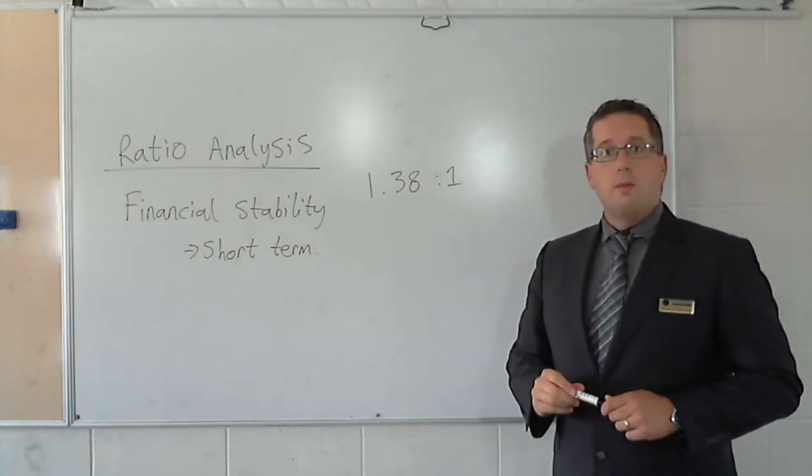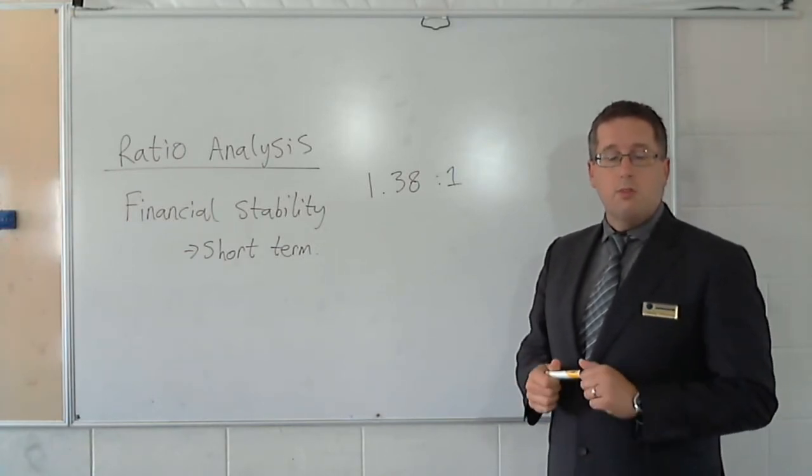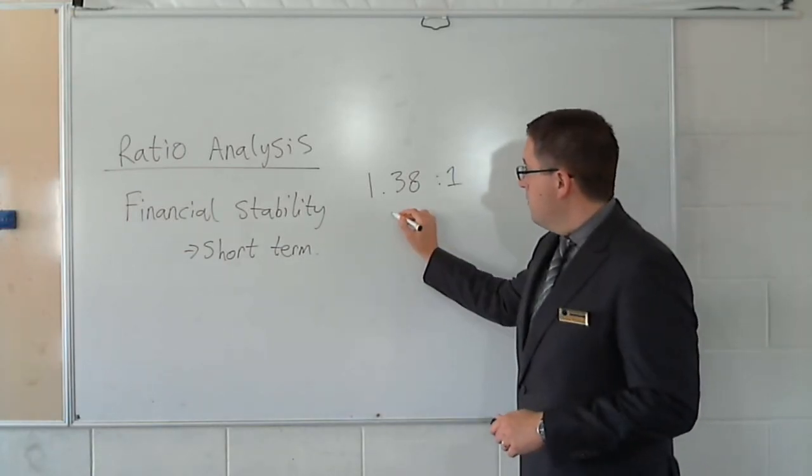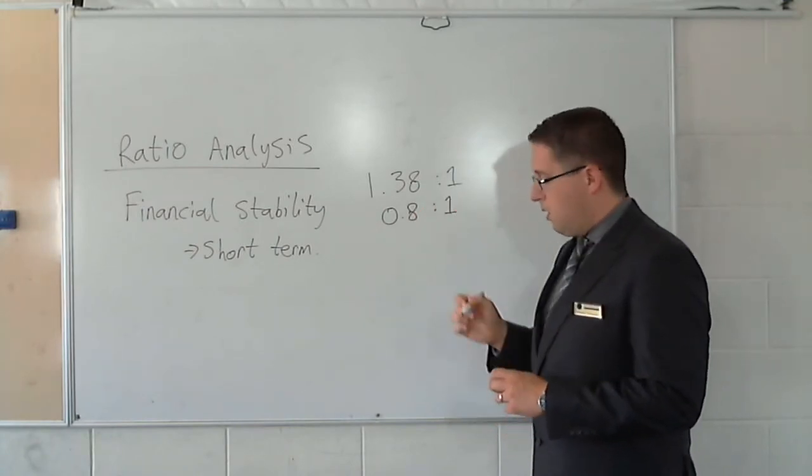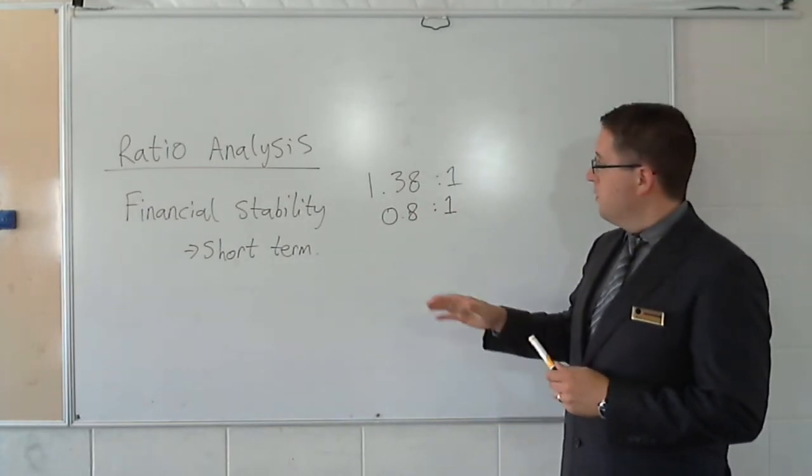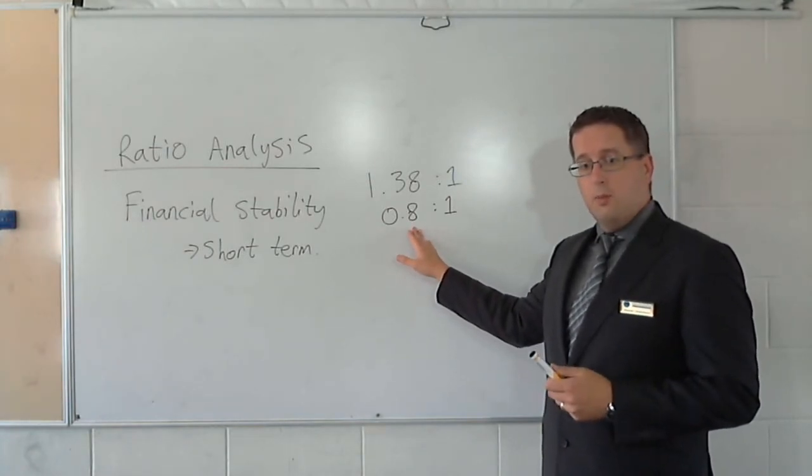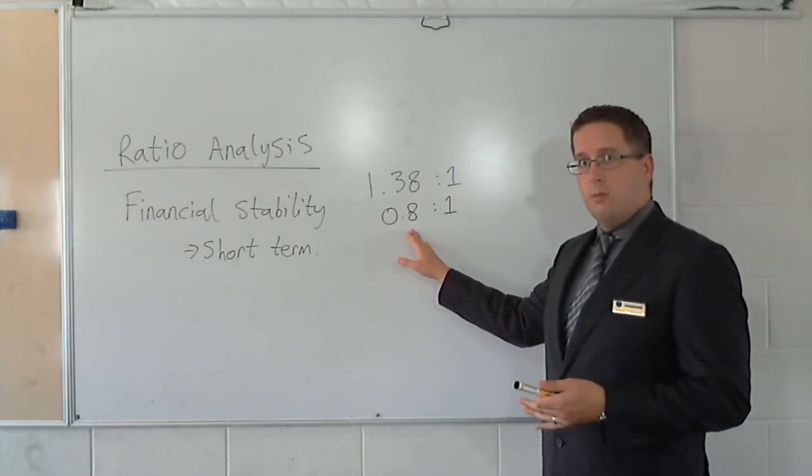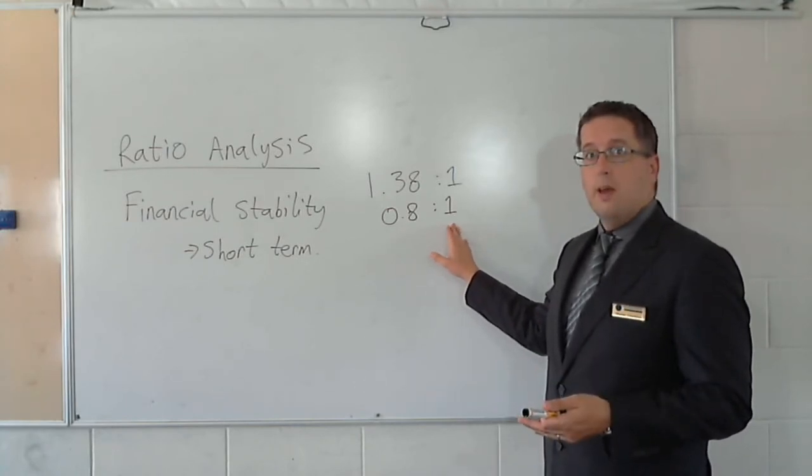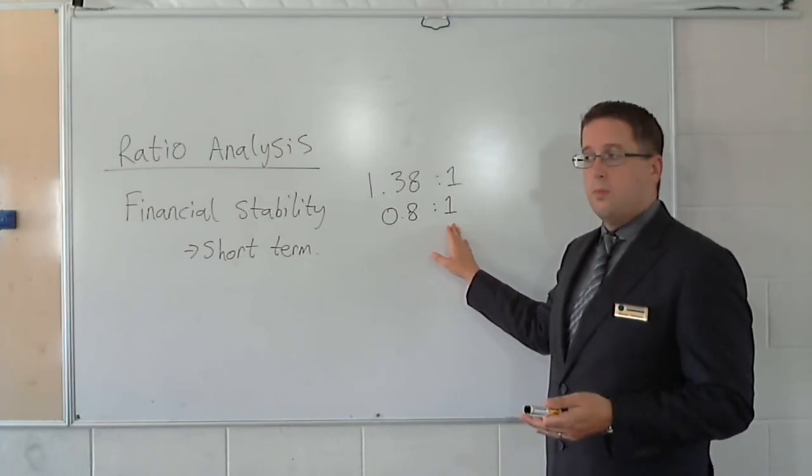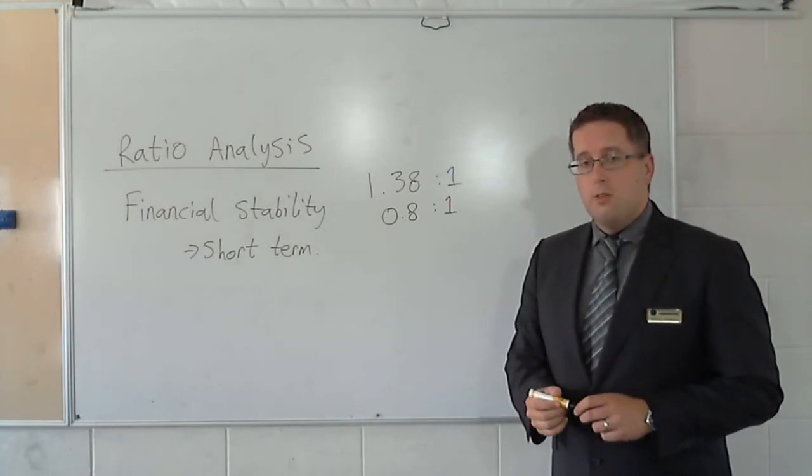Now sometimes they might be running low in cash. Sometimes it's not a good figure. And so if you have something like 0.8 to 1, for example, that means they have 80 cents in current assets for every $1 that they need to pay off current liabilities. So that's not a good situation to be in.